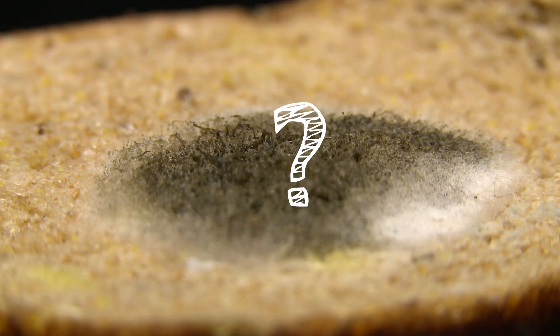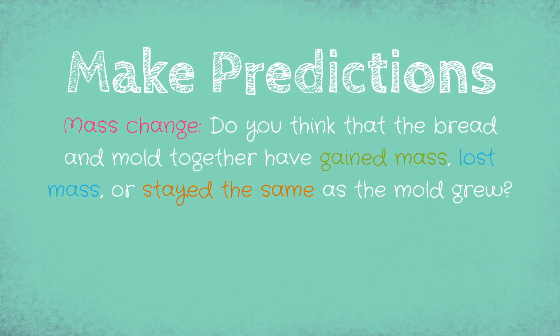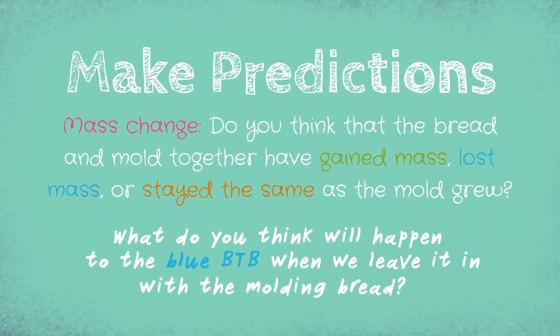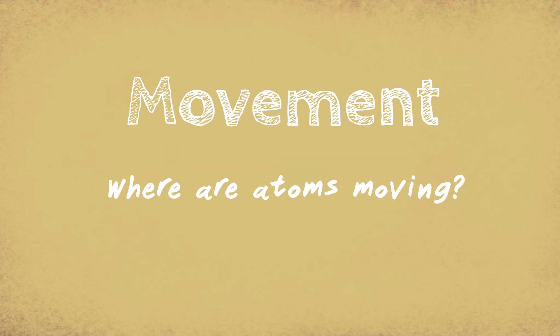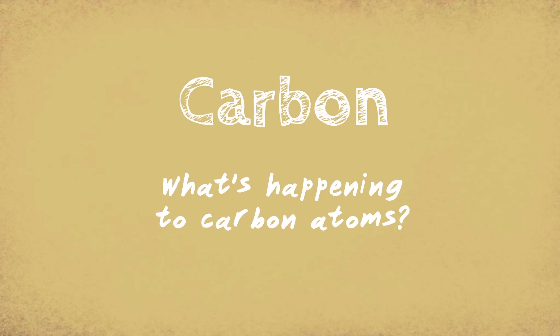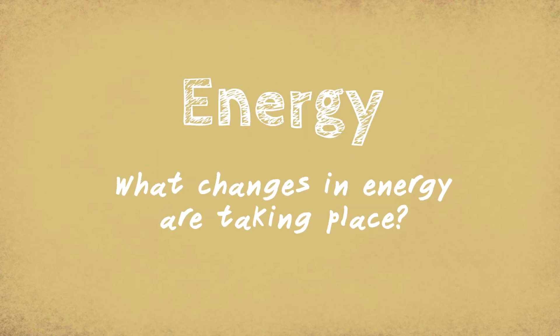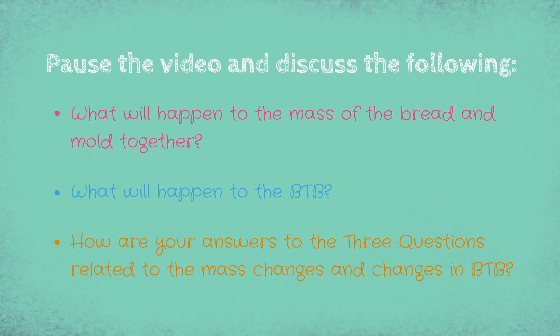Now we've got to figure out what the fungus has been doing to the bread. So let's make some predictions. Do you think that the bread and mold together have gained mass, lost mass, or stayed the same as the mold grew? What do you think will happen to the blue BtB when we leave it in with the molding bread? To really figure out what's going on here, we need to consider three questions: the movement question — where are atoms moving? The carbon question — what is happening to the carbon atoms? And the energy question — what changes in energy are taking place? Now we'll pause so you can make some predictions.